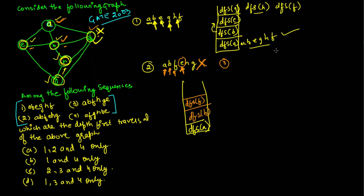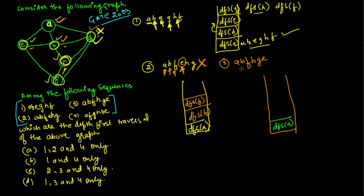Now let us check sequence number three: A, B, F, H, G, and E. Initially we call DFS on A; adjacent vertices are E, B, and F, so we can call any one. Here they called vertex B, so we call DFS on B. The adjacent vertices of B are E, F, and H, so we can call any one — here they called F, so we call DFS on F. Adjacent to F are A, B, H, and G; A and B are already visited, so we can choose between H and G.